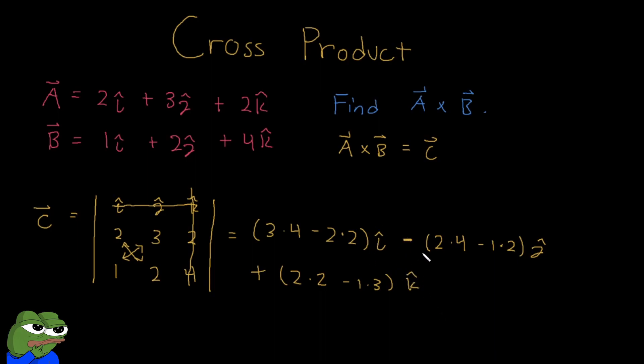Now remember, we have letters in our answers like this with the hats on top because our answer, which is our resultant, should always be a vector since we're doing cross product. So what does this end up with? We end up here with 12 minus 4I, minus 8 minus 2J plus 4 minus 3K.